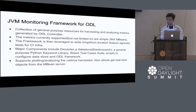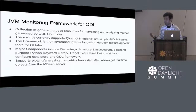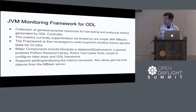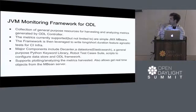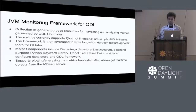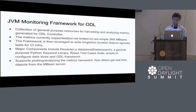Once we have the framework, we can leverage it to write long or short duration, feature-agnostic tests for the CI infrastructure. We have a very small set of tests right now, but a test could be something like checking an SLA being honored over 24 hours while the ODL controller is running — for example, if the garbage collector takes more than one minute to complete at any point, that's quite long for any Java application. The major components include Decanter, a data store to dump all the data, a general purpose library we developed, a small canonical robot test suite, and scripts to configure and glue it all together. We also have support for plotting and analyzing the metrics harvested, and support for getting real-time data from the MBean server.